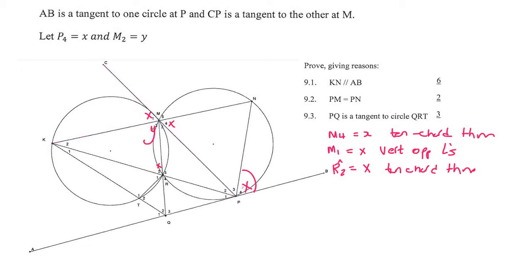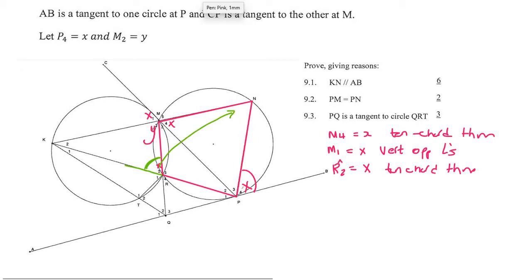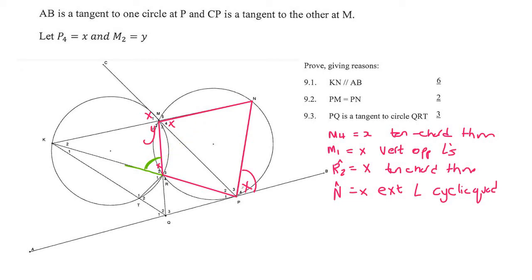Now look at cyclic quadrilateral NMRP — extend the line a little bit. We can see that this angle is the exterior angle of that cyclic quad. We know the exterior angle of a cyclic quad is always equal to the interior opposite angle, so we can say angle N is equal to x because it is the exterior angle of a cyclic quad.